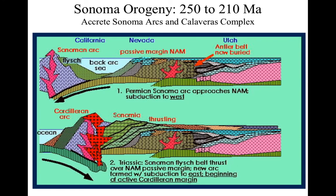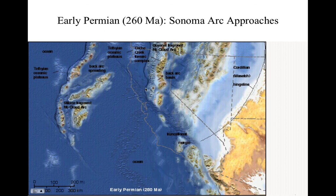And then the Sonoma orogeny. Remember, we've accreted the northern Sierra terrain and the shoofly complex. We got the passive margin on the edge of it. But then we get this back-arc sea and we're forming the Calaveras complex in here, plus the Sonoma arcs. Eventually they're going to collide — we're going to thrust over the Calaveras complex, the Sonoma arcs. And for the first time after this collision, we're going to see the suture here between the shoofly and the Calaveras — so it's that shoofly-Calaveras fault. When this orogeny happens, for the first time we're going to see subduction under North America — the eastward subduction, beginning of active Cordilleran margin. Some of the oldest granitic rocks in the Sierra Nevada are about 210 million years old — that's the timing of this eastward subduction. And then back here is the foothill subduction, which is going to be the Maloney's fault zone.